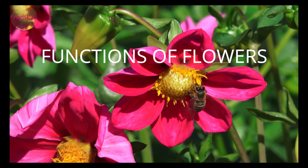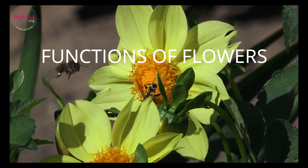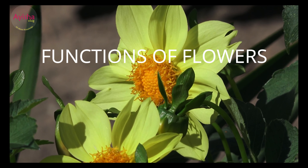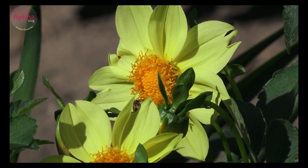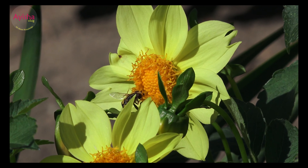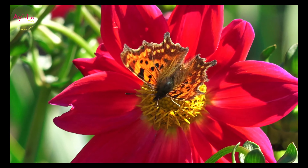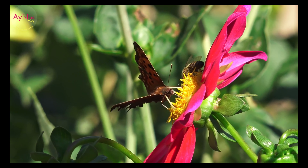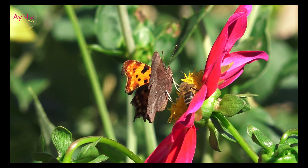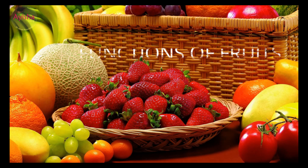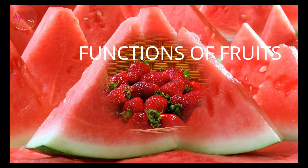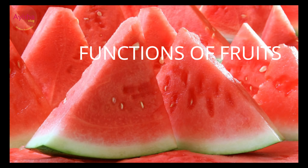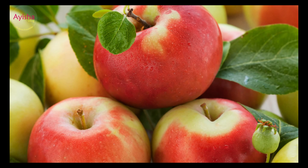Functions of flowers. Flowers help in reproduction. They produce seeds which form new plants. Many flowers are brightly colored and some flowers give out a pleasant scent. Functions of fruits: a fruit is a part of the plant that protects the seeds. Seeds again give rise to new plants.